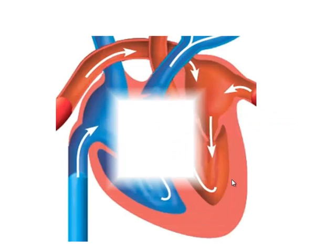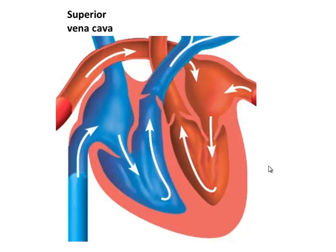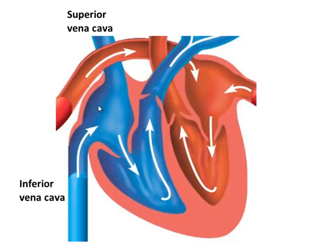To start off, it's important to know a little bit more about the vessels leading into and out of the heart. In the heart, we have the right atrium, the right ventricle, the left ventricle, and the left atrium. The vessels that lead into the right atrium are known as the vena cava — the largest vein in the body. The one coming from below the body is called the inferior vena cava, and the one coming from above the heart is the superior vena cava. Both will empty blood into the right atrium.